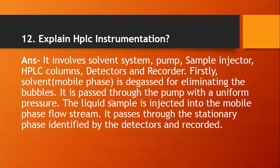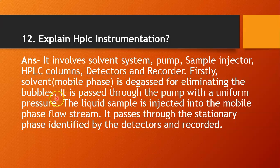The next question is: explain HPLC instrumentation. The HPLC instrument includes a solvent system, pump, sample injection port, HPLC columns, detectors, and recorders. First, the solvent or mobile phase is degassed to eliminate bubbles, then it is passed through the pump with uniform pressure. The liquid sample is injected into the mobile phase flow stream with a sample injector, then it passes through the stationary phase, which is identified by the detectors, and the result is recorded.